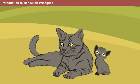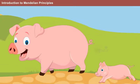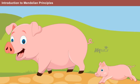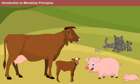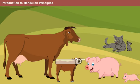Cat produces kittens, cow produces calves and pig produces piglets and so on. However, the offspring may express various similarities and variations in their characteristics.